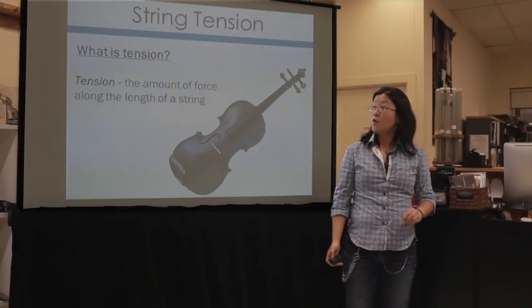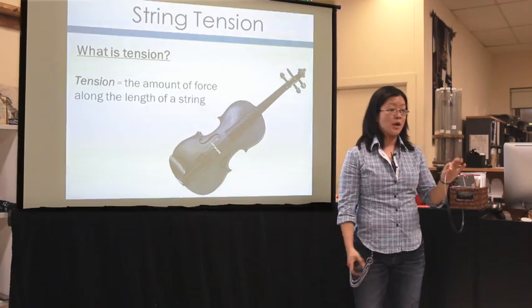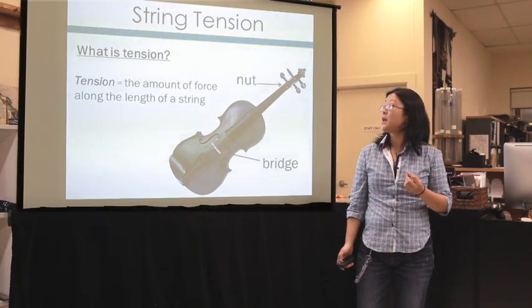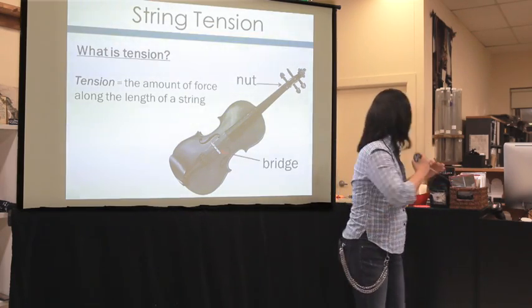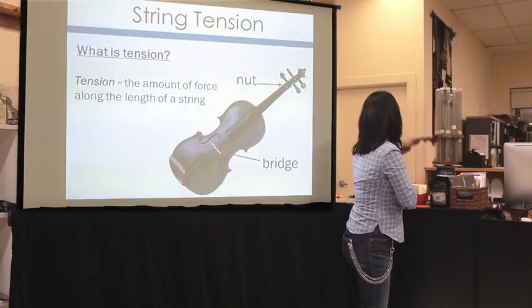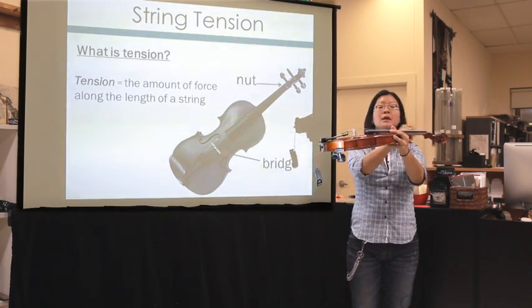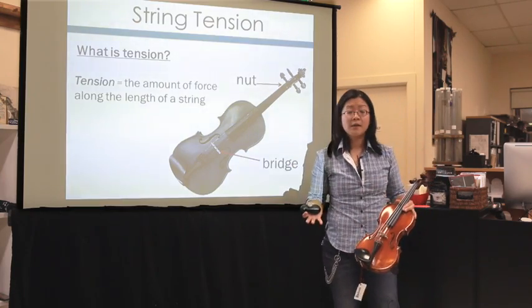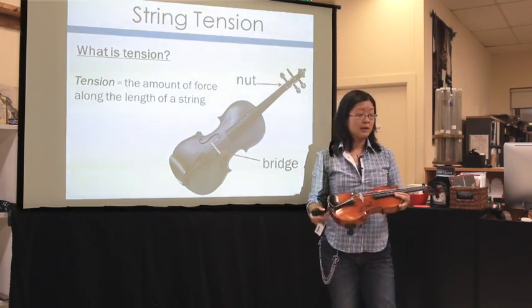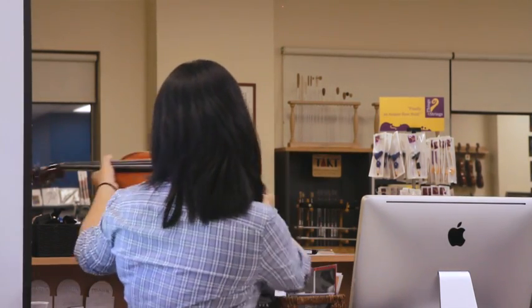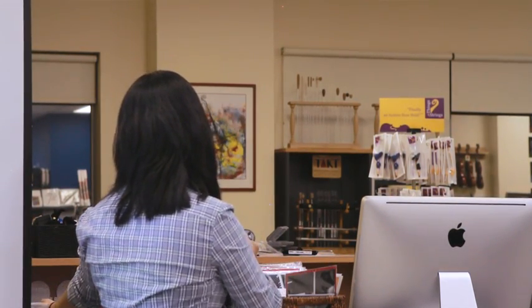Tension, as string makers like to talk about it, is the force along the length of the string, measured between the nut and the bridge. This length is commonly known as the playing length or the vibrating length, because that's the part that vibrates the most. Tension is usually measured in pounds or kilograms.